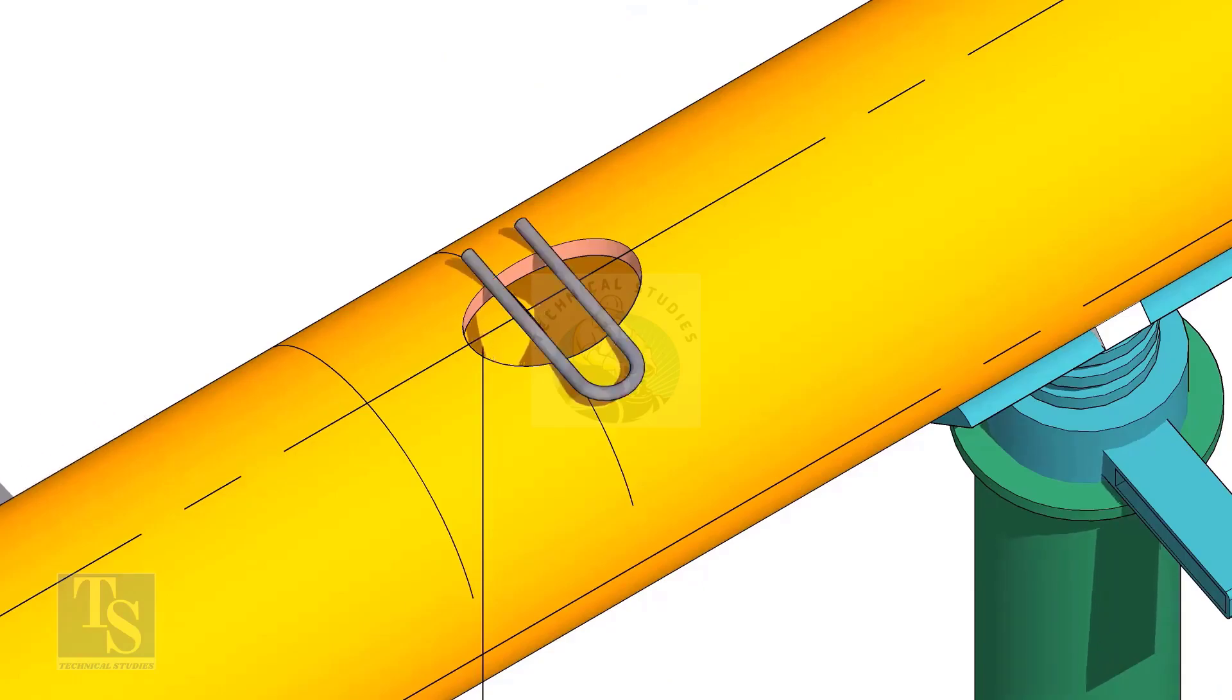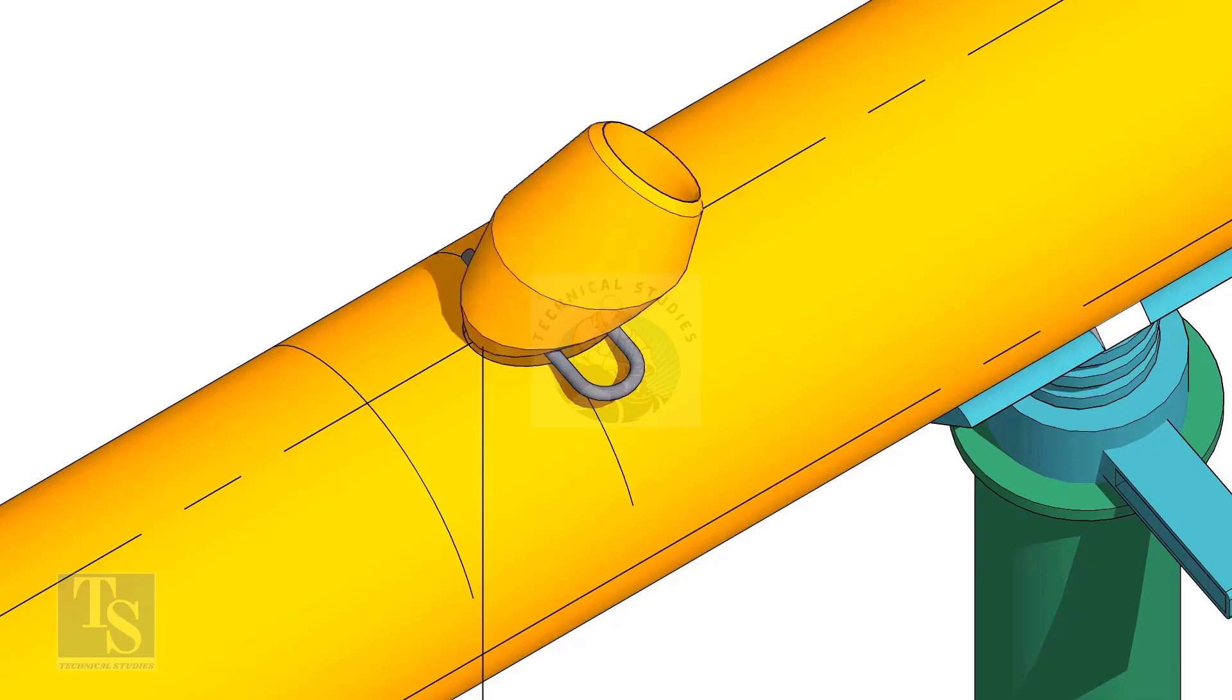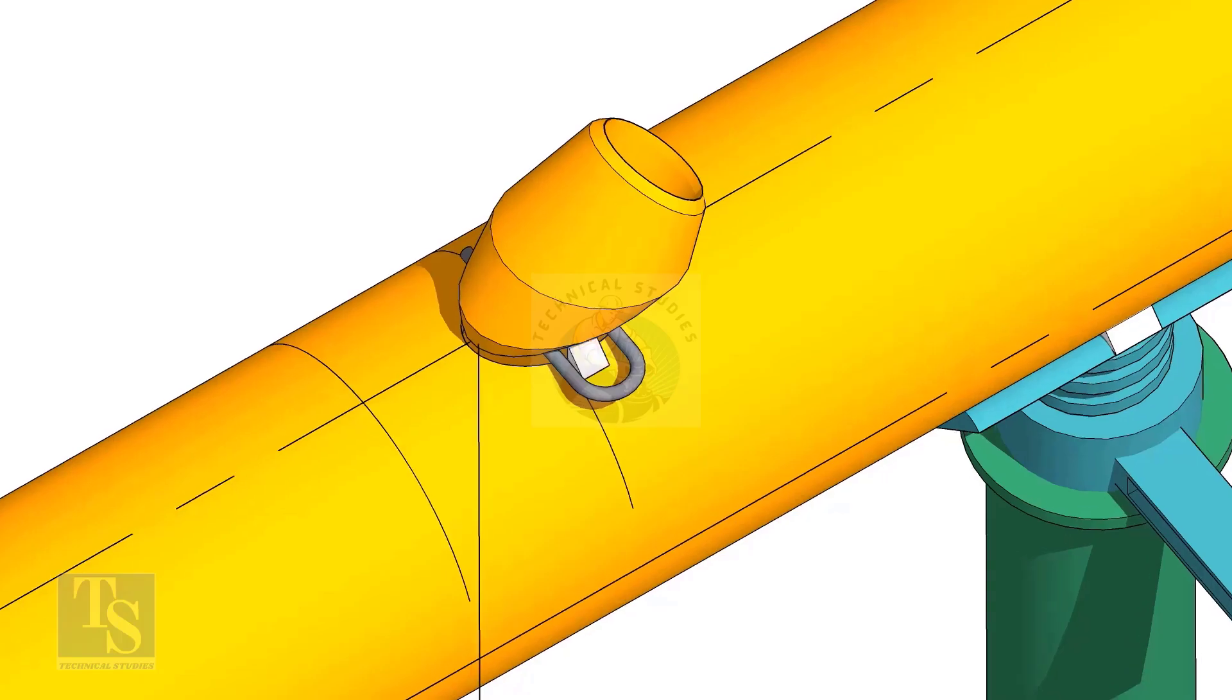Cut and clean the opening on the header. Put the laterolette on the center of the hole. Tack weld on one side.